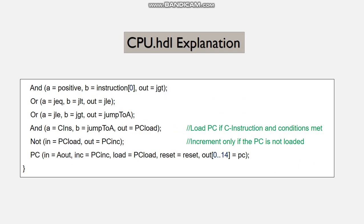At the end, the PC contains the address of the instruction to be fed next. The load bit of the PC is determined by the jump bits and the ALU outputs — they determine the jump condition and check the ALU output to see if the conditions are met. If the instruction is a C instruction and the conditions are met, the PC is loaded with the value that will ask the CPU to jump to the specified value or symbol. If the PC is not loaded, then it is incremented — that is, it will be reading the next instruction. With this, the HDL code ends.